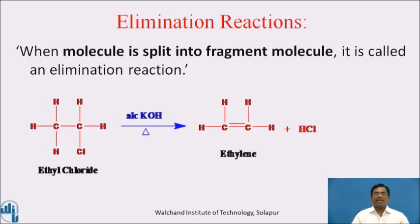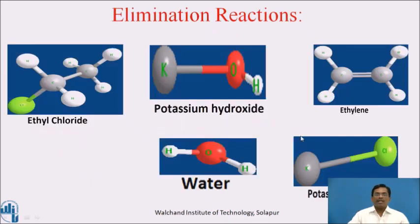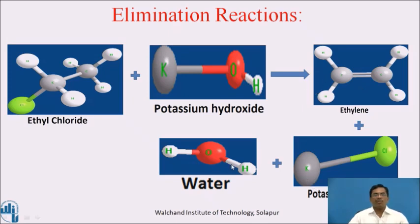Next reaction is elimination reaction. When a molecule is split into fragment molecules, it is called an elimination reaction. For example, ethyl chloride when refluxed with alcoholic potassium hydroxide gives ethylene and hydrochloric acid. This is shown in the presentation: potassium hydroxide reacts with ethyl chloride to form ethylene, potassium chloride, and water.